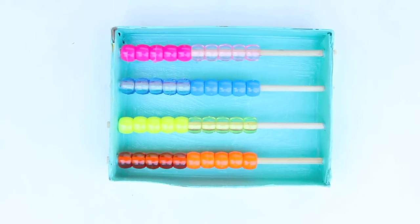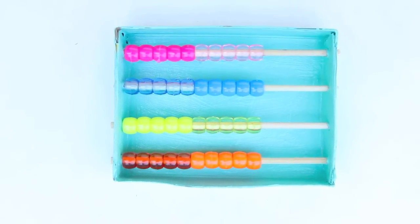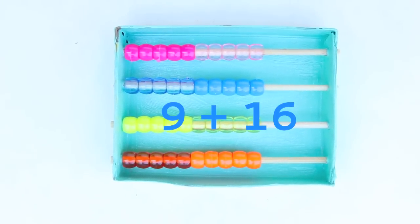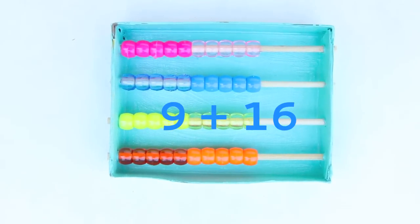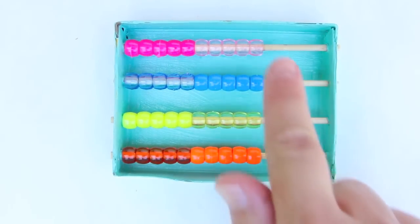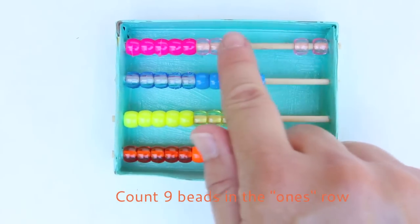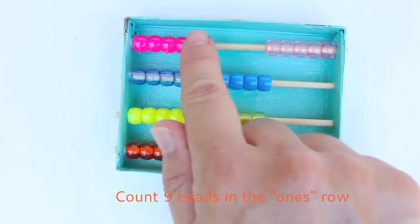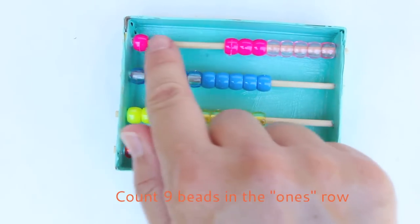Now let's try a simple addition problem using an abacus. Let's try the problem nine plus 16. To start, we're going to count out nine beads in our ones row. One, two, three, four, five, six, seven, eight, nine.